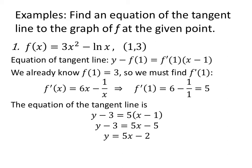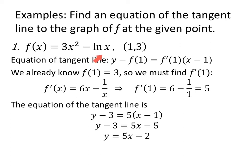We can find equations of tangent lines using natural log derivatives. If F of X is 3X squared minus the natural log of X, and the point (1, 3) is on the graph, the tangent line is y minus f(1) equals f prime(1) times x minus 1. We know f(1) is 3. The derivative is 6X minus 1 over X, and evaluating at X equals 1 gives 6 minus 1, which is 5. So the equation of the tangent line is y minus 3 equals 5 times x minus 1, which simplifies to y equals 5x minus 2.